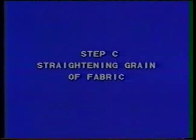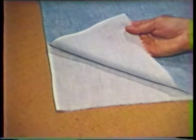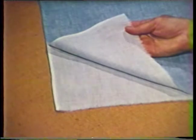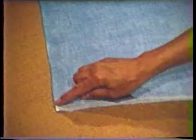After the ends of the fabric are straight, it is important to straighten the grain. To see if the grain is straight, fold the fabric in half matching the selvage edges. Fabric should be smooth without any wrinkles. Check the end parallel to the crosswise grain. If the two layers of fabric are uneven, the fabric is off grain.